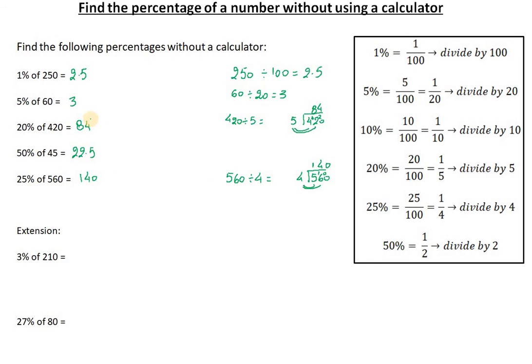The first one we need to find 3% and the second one we need to find 27%. So for 3%, I'm actually going to find 1% first. 1% of 210 is 210 divided by 100, which is 2.1.